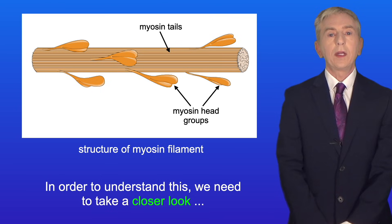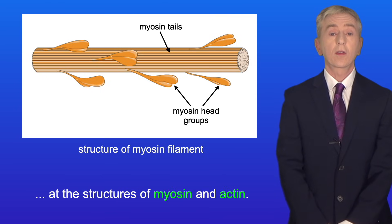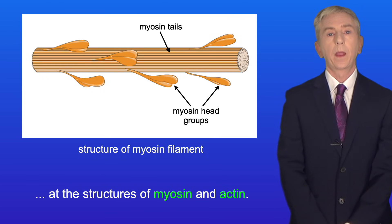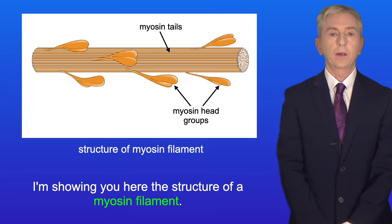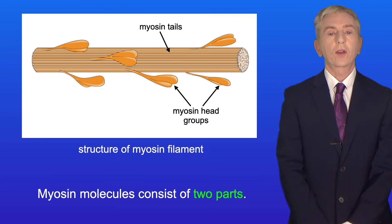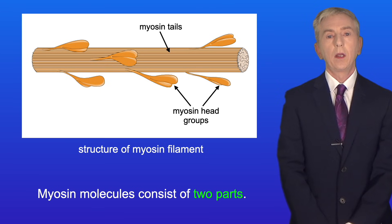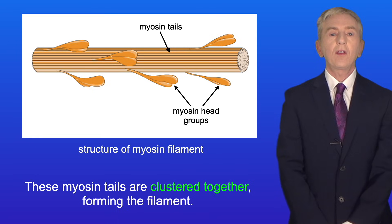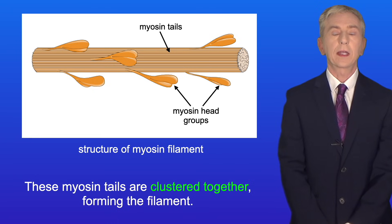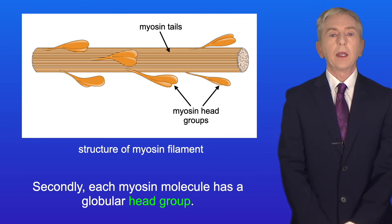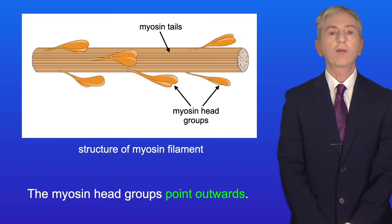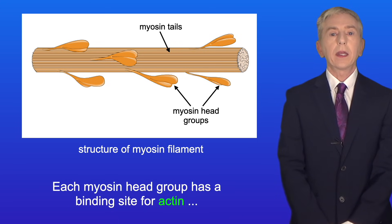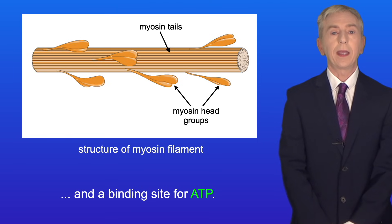In order to understand this, we need to take a closer look at the structures of myosin and actin. I'm showing you here the structure of a myosin filament. Myosin molecules consist of two parts: firstly, myosin has a long fibrous tail structure — these myosin tails are clustered together, forming the filament. Secondly, each myosin molecule has a globular head group. The myosin head groups point outwards, and each myosin head group has a binding site for actin and a binding site for ATP.